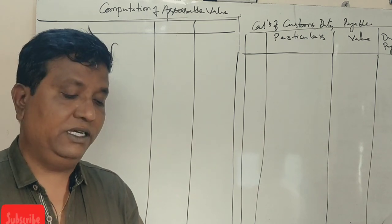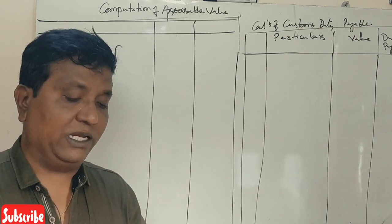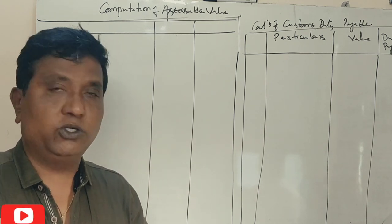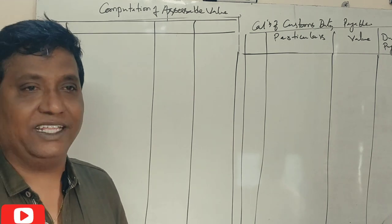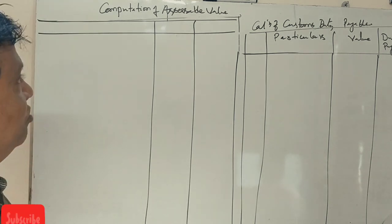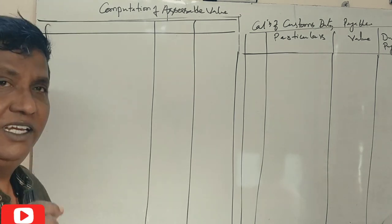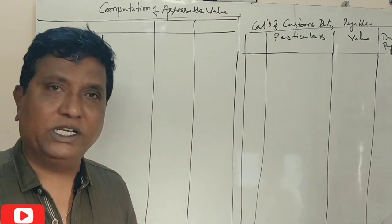Find the customs assessable value and the total customs duty payable. Now, in this question we have the FOB value given — and that is the key problem here.